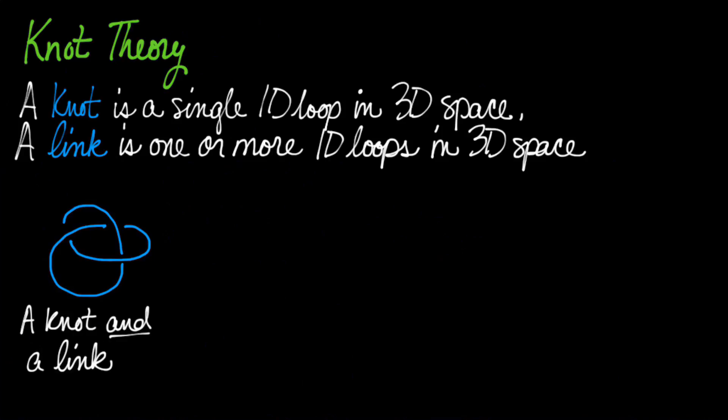Here is a single loop that's in 3D space. Now, do you see how I drew this diagram, how there's breaks in the string? That's just to indicate to you as you're looking at it which string should be on top and which should be on bottom.